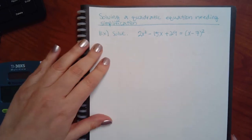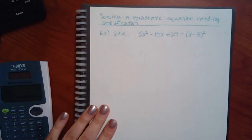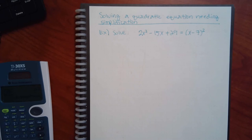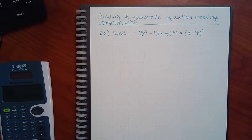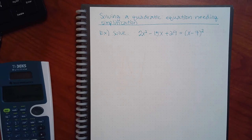This one is going to take some work to get it equal to zero. That's why this topic is called solving a quadratic equation needing simplification. It's going to take some work to get it to equal zero. Can we start by simplifying one side first?